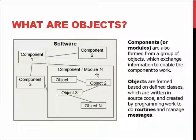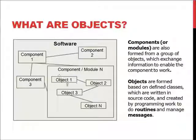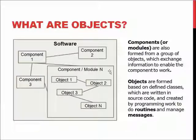These objects are formed based on defined classes, which themselves are defined, for example, in UML or a class diagram. The classes are written in source code, created by doing programming work, and they do routines and manage messages. The objects exchange messages to create the functionality that the component does. The component is the umbrella term for objects, similarly as software is an umbrella term for components.